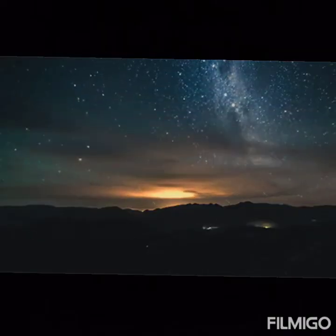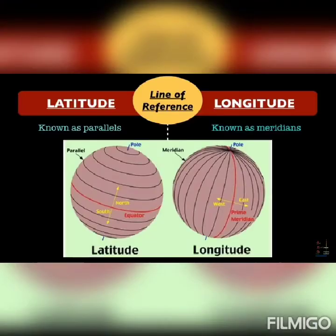Now let's look at latitude. Lines of latitude are imaginary circular lines drawn around the earth from east to west. These lines are also known as parallels of latitude because they are parallel to the equator.